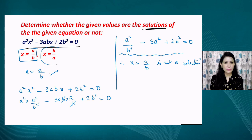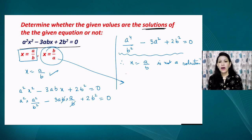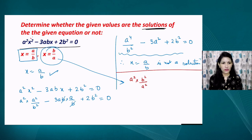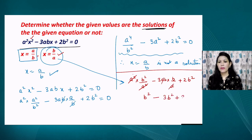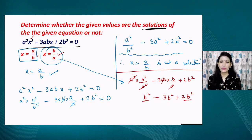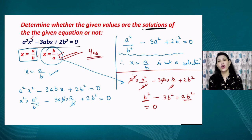Now if we put x = b/a into the same equation a²x² - 3abx + 2b² = 0, we get a²·(b²/a²) - 3ab·(b/a) + 2b², which gives b² - 3b² + 2b². Clearly, +b² and -3b² and +2b² sum to zero. The right-hand side is also 0, therefore this value x = b/a is a solution of the given equation.